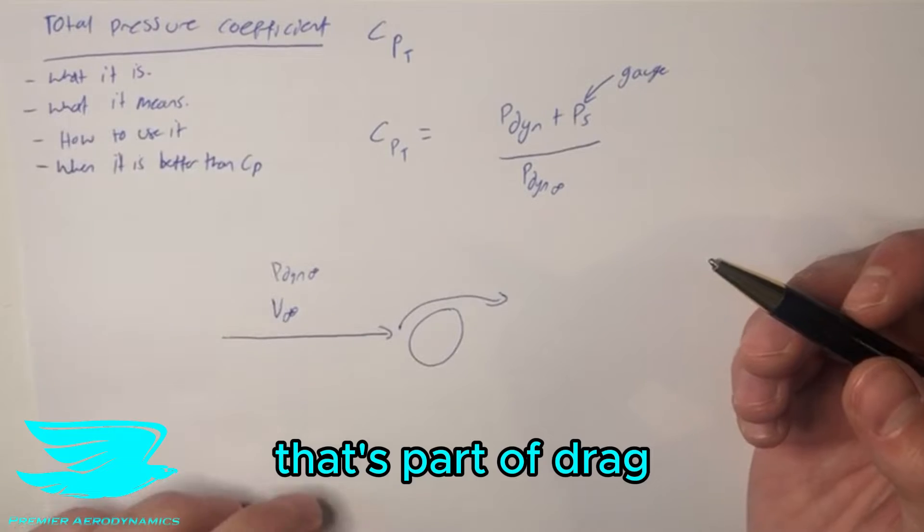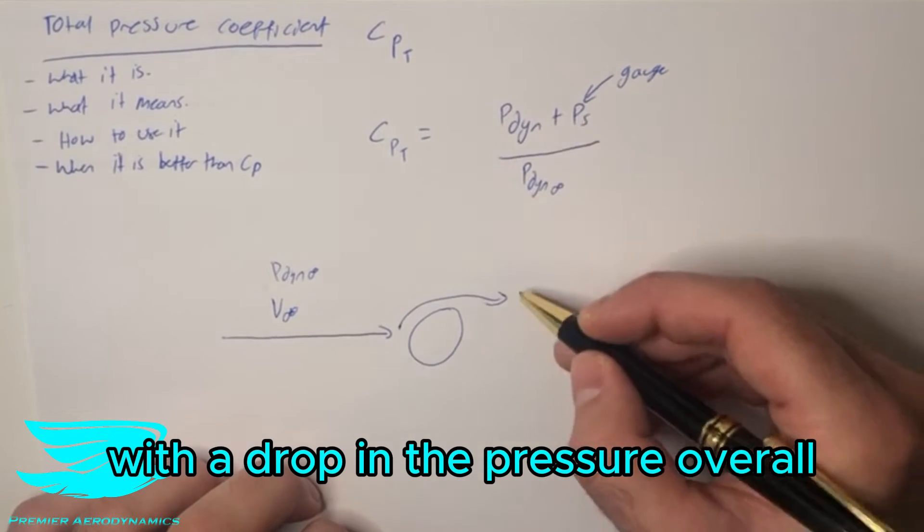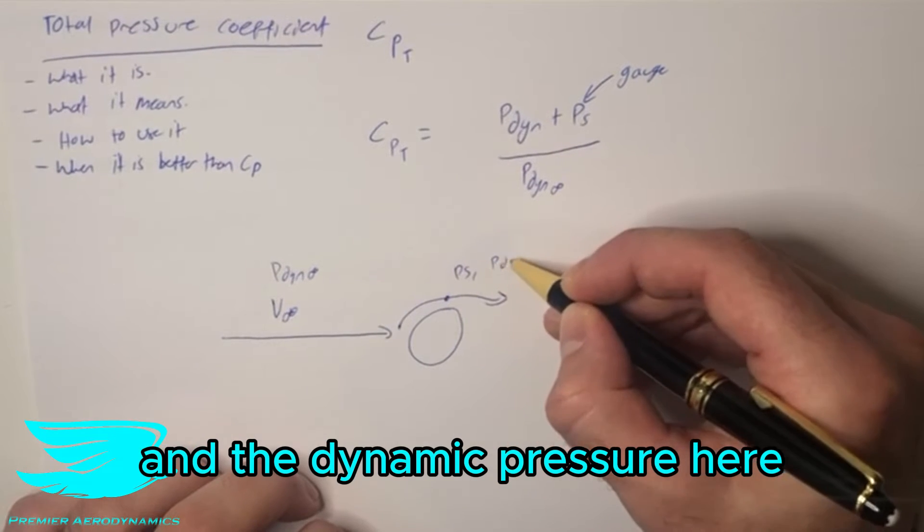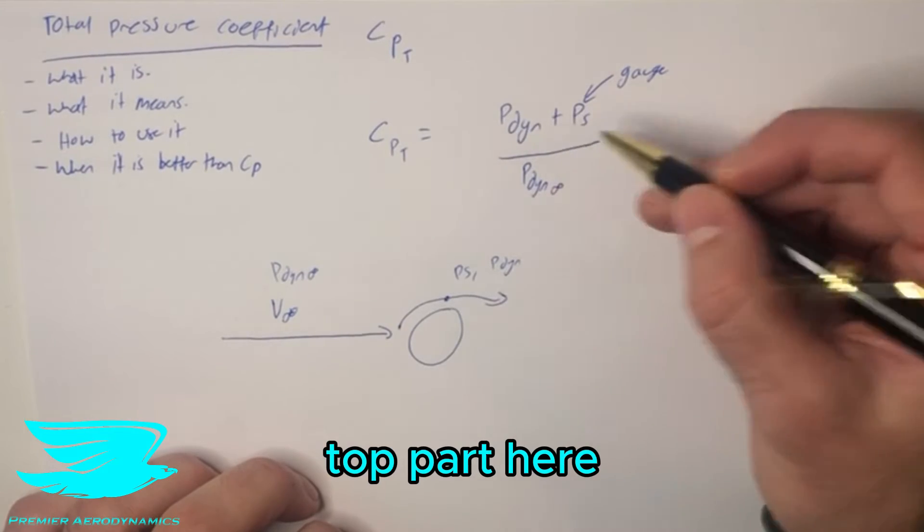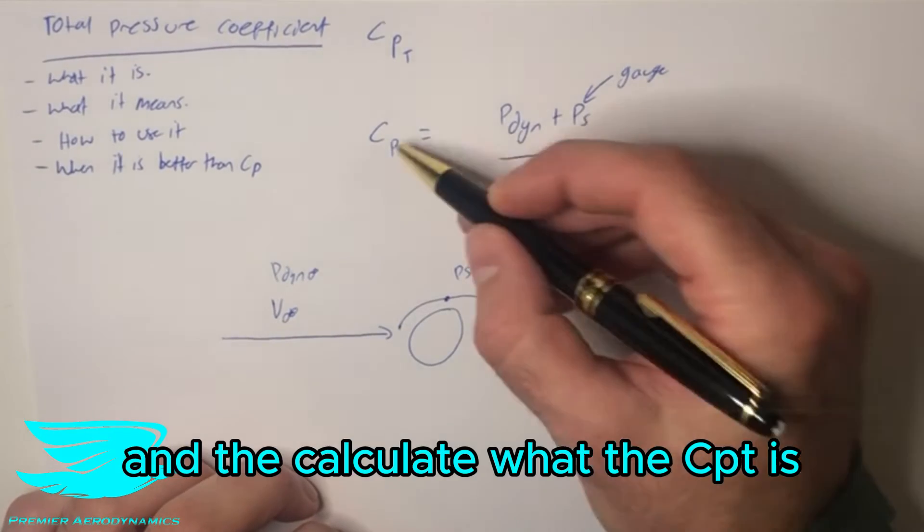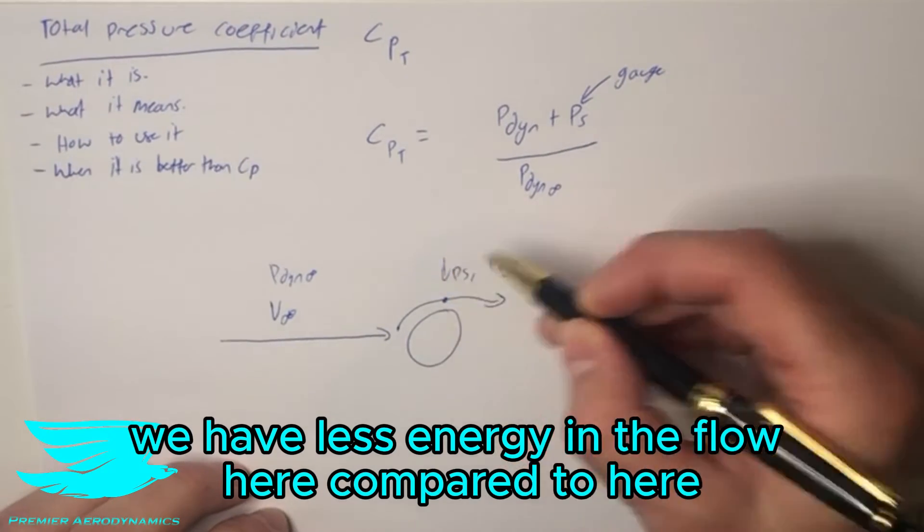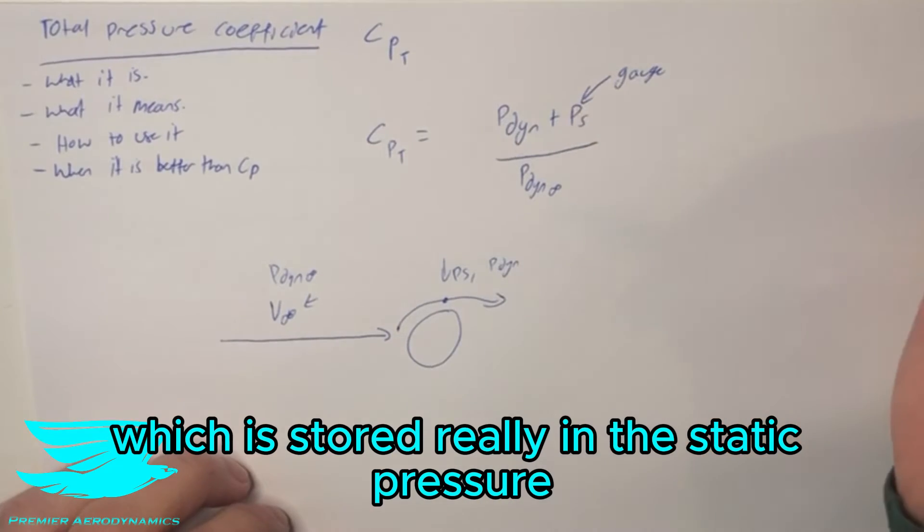That's part of drag and this usually comes about with a drop in the dynamic pressure overall. So if we were to take a point here and we measure the static pressure here and the dynamic pressure here and we plug both of these values into this top part here, the numerator and then calculate what CPT is, we'll see that effectively we have less energy in the flow here compared to here including the potential energy which is stored really in the static pressure.